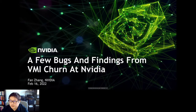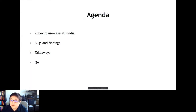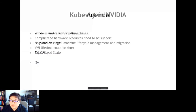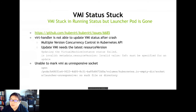Today I'm going to talk about a few bugs and findings from VMI churn in our practice. The agenda covers KubeVirt use cases at NVIDIA, some interesting bugs and findings, and takeaways. NVIDIA is leveraging KubeVirt as the core part to build cloud-native infrastructure and services on on-premises data centers to support globally multi-tenancy workloads.